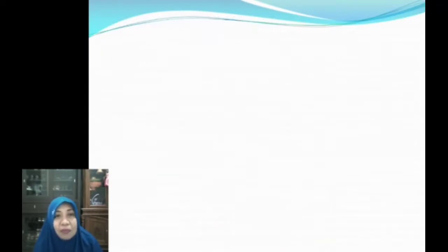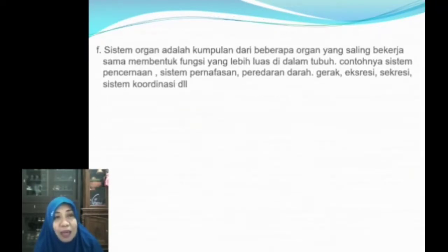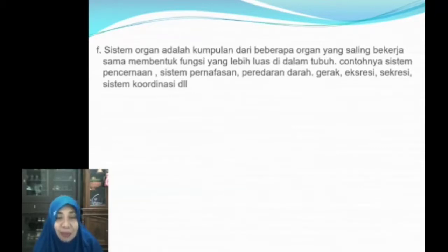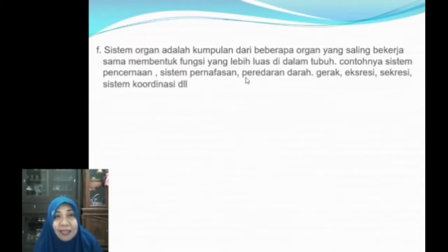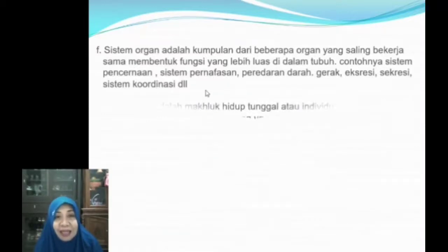Berikutnya, setelah organ, tingkatan berikutnya adalah sistem organ. Sistem organ adalah kumpulan dari beberapa organ yang saling bekerja sama membentuk fungsi yang lebih luas di dalam tubuh. Contohnya sistem pencernaan, sistem pernafasan, sistem peredaran darah, sistem gerak, ekresi, sekresi, sistem koordinasi, dan lain-lain.